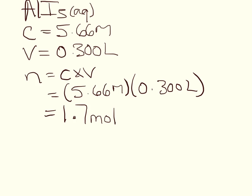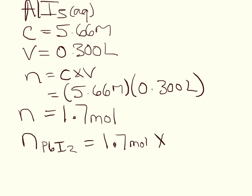That is the number of moles of aluminum iodide, but we need to figure out the limiting reagent, so we need the moles of our solid product — lead(II) iodide. To do that we use a mole ratio: 1.698 moles × (3/2). The 3 comes from the coefficient in front of lead iodide and the 2 from in front of aluminum iodide in the balanced equation. That gives us 2.547 moles of lead iodide.